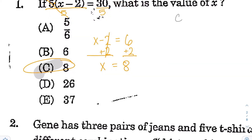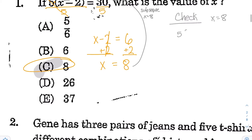Now what you can do is check your work. When you check that x is equal to 8, you would do a substitution. Everywhere you see the variable x, substitute x equals 8. So instead of 5 times x minus 2, it would be 5 times 8 minus 2, and you want to see if that equals 30. Using the order of operations, do the parentheses first: 8 minus 2 is 6, and then 5 times 6 is in fact equal to 30, so everything checks out.